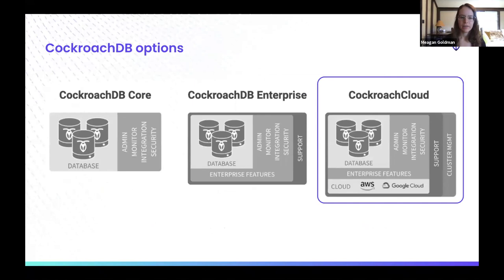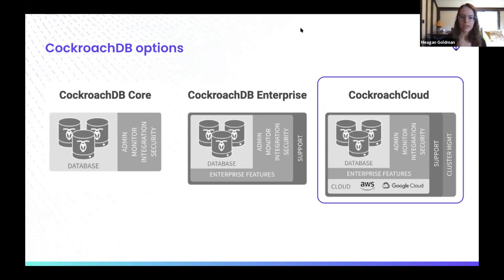To wrap up this introduction, we offer three different versions of Cockroach. CockroachDB Core is our open source version — free, just download the binary from our docs. Enterprise comes with an Enterprise license, more features suitable for enterprise-grade applications, and paid support. And we have Cockroach Cloud, our managed service, which has been growing the fastest and is super easy to get started with. All the features we're going to be covering today — all the new stuff in 20.2 — is available for free in the open source core version, so it'll be super easy to try them out.